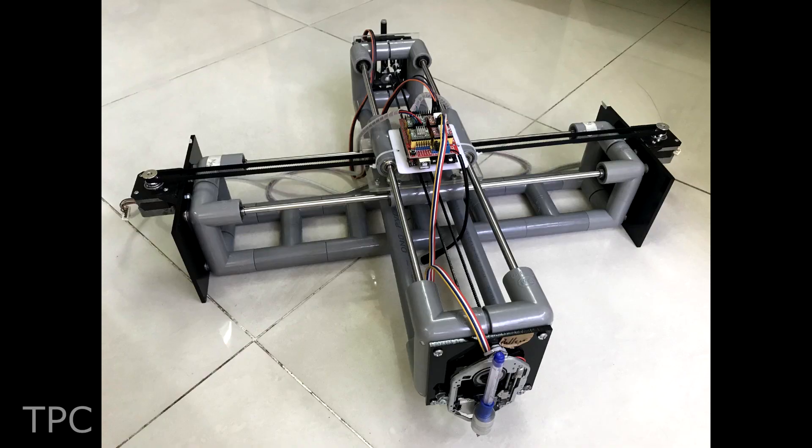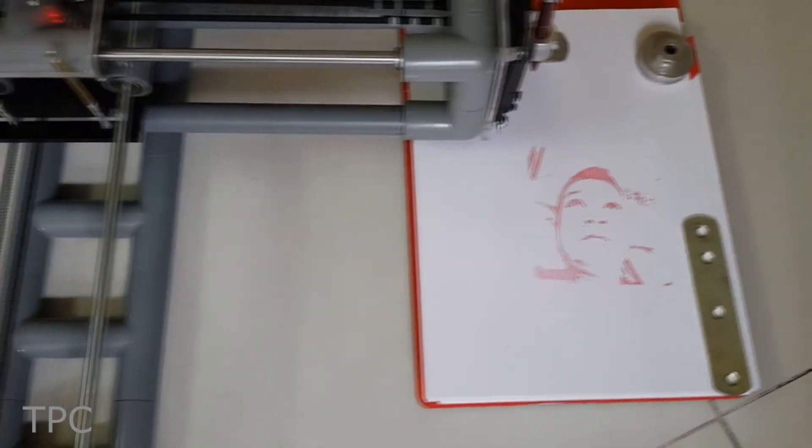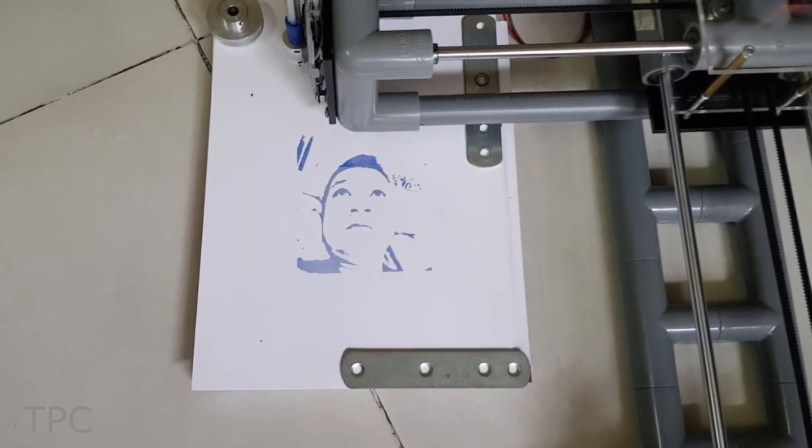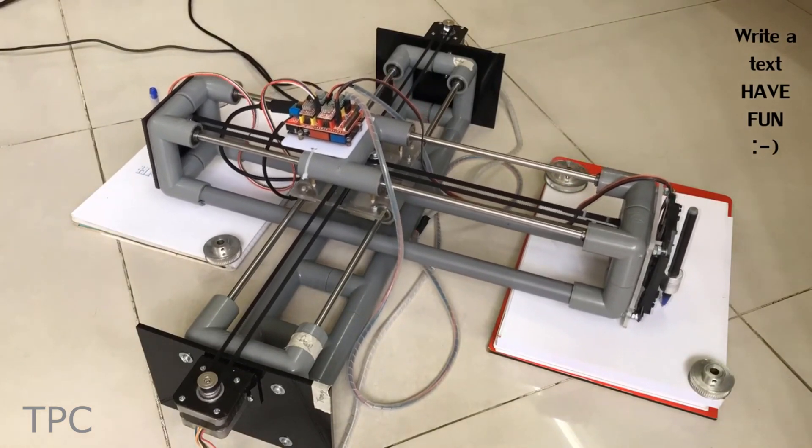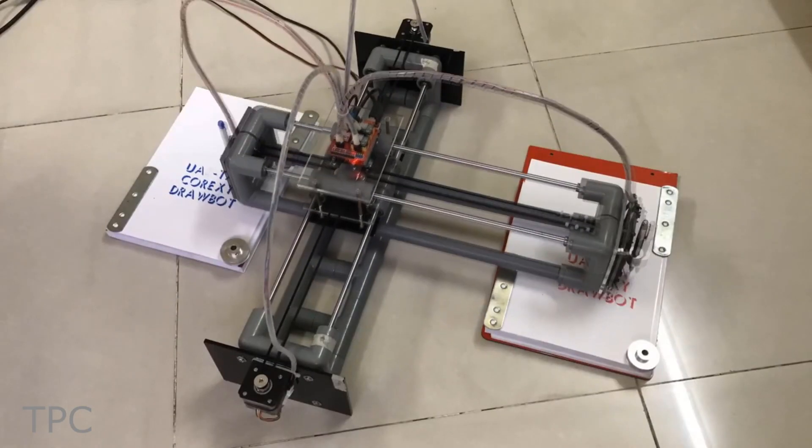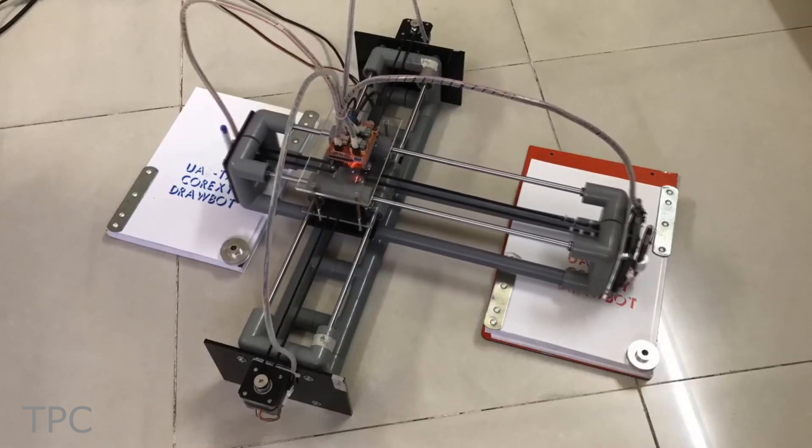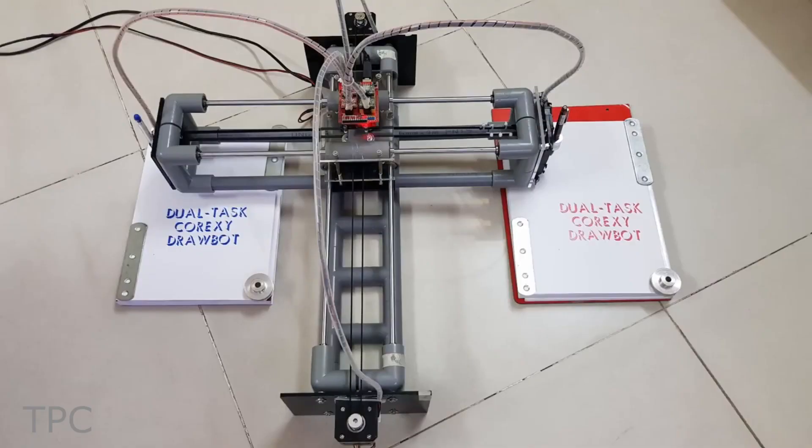With a pen at each end of the Z-axis, it can draw two identical images or texts at the same time. Now, only thing left is to upload G-code and translate it into motor movements. It's a very high-performance mechanism and with a proper build, you can get excellent precision.